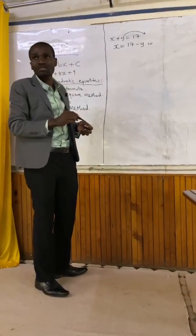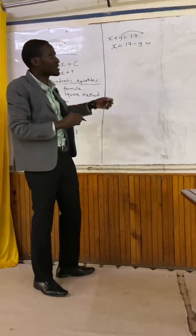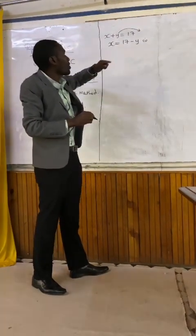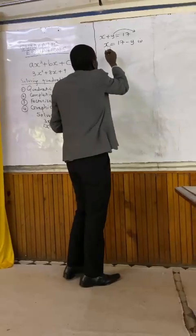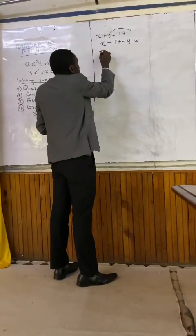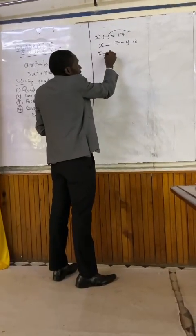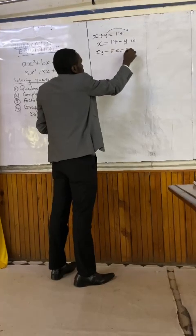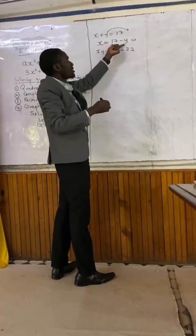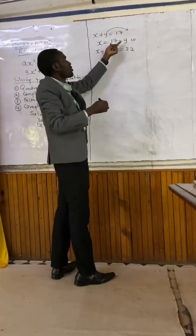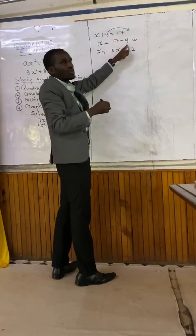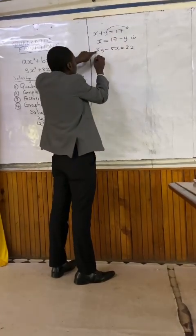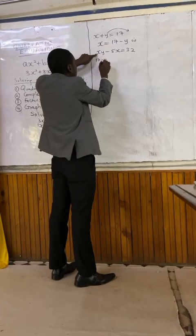So the expression that can help us to get x is 17 minus y. We are going to write down our second equation, which reads xy less 5x, and the answer is 32. Where there is x, we replace with 17 minus y. So we shall write 17 minus y.